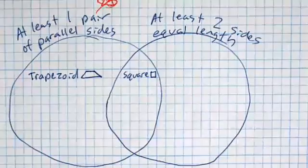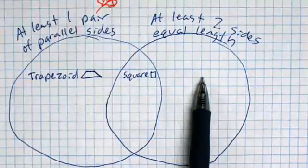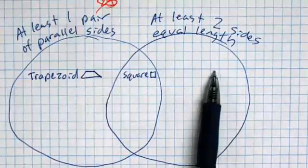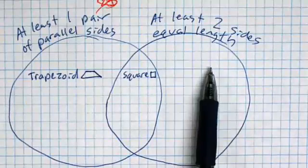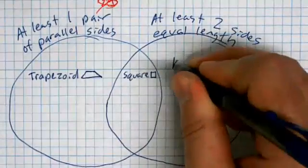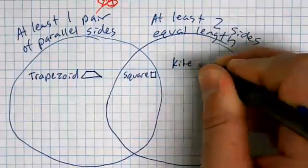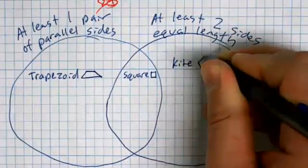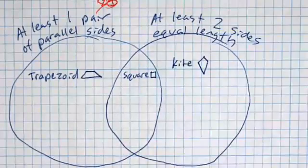Can somebody give me a shape that would go in this right-hand side? Over here in this region, we're looking for something that has two sides of equal length, but no parallel sides. What are you thinking, Alice? A kite would be a great example of one. It's got equal sides. The two top sides are equal, the two bottom sides are equal, but nothing's parallel in a kite.